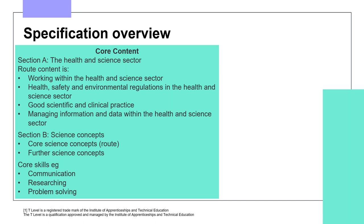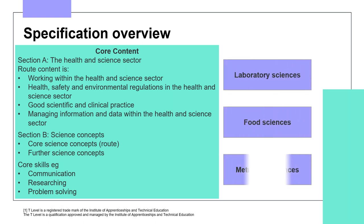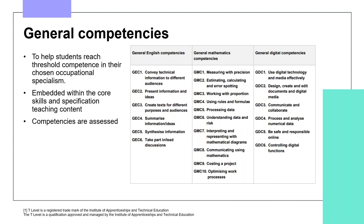Section A Root Content covers four specific elements and all of B1 is Root Content. The Occupational Specialisms contain content, knowledge and skills specific to the occupational role, which will differ from one specialism to another based on threshold competency for that job role. There is also the General Competency Framework, which lists the English, Maths and Digital Skills competencies that students will be taught, as these are embedded within the specification and assessed.